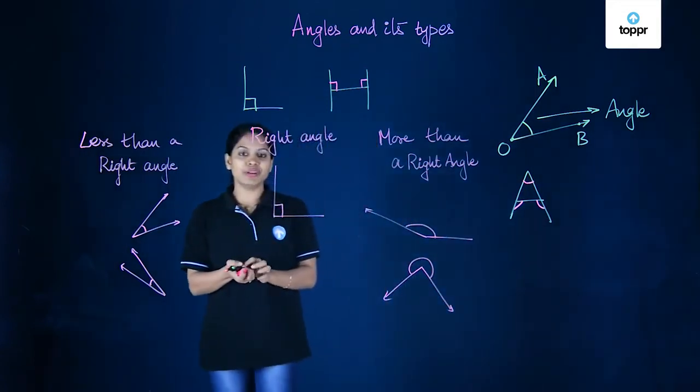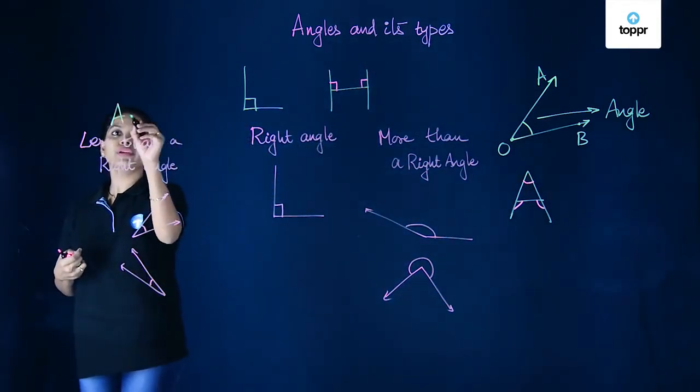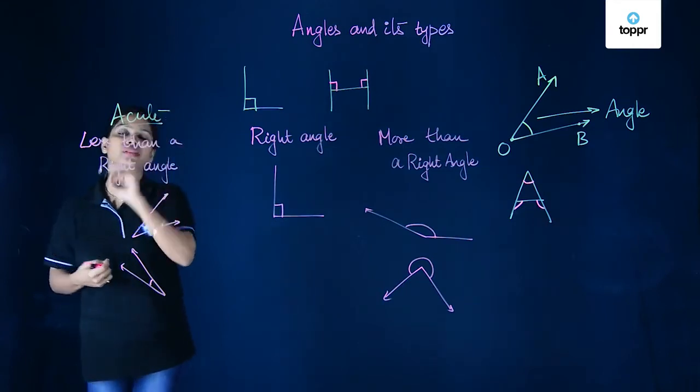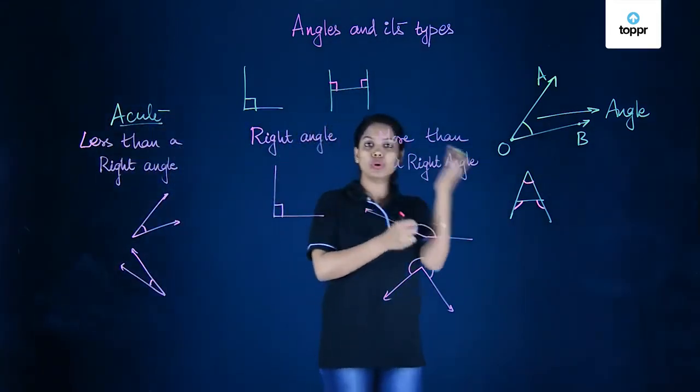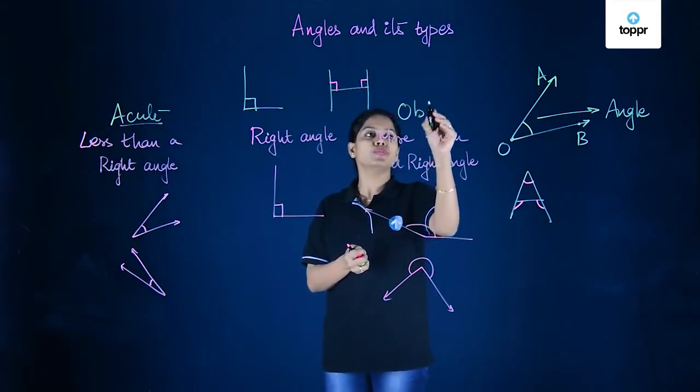So the names given to these are: if an angle is less than a right angle, we call them acute angles. And if an angle is more than a right angle, they are called obtuse angles.